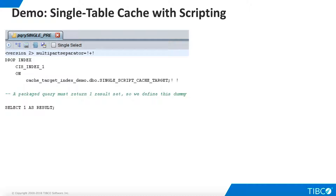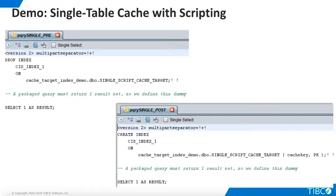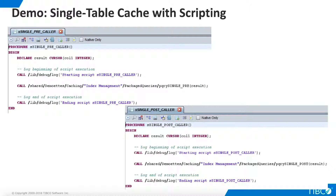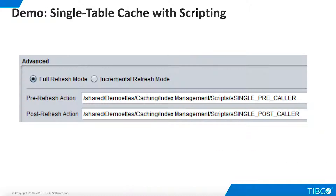Now that the basic single table cache is working, we can think about managing indexes with scripts. My goal is to drop the index prior to a cache refresh, and then recreate the index after the cache refresh completes. These two operations are shown here in TDV packaged queries. Packaged queries must return a result set, so we create a dummy result set for each. This creates a problem for automatic single table indexing, however, because the pre- and post-refresh scripts we use for single table caching must not return any data. To solve this problem, we simply wrap the packaged queries in SQL scripts that don't return any data.